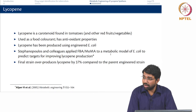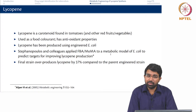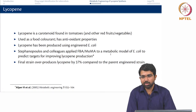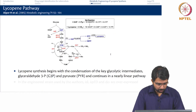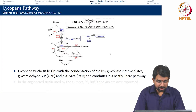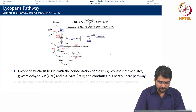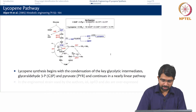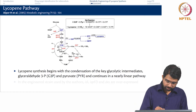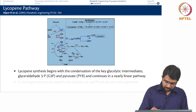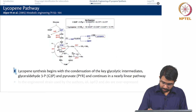The parent strain was already an overproducer and they could improve upon that by 37% solely using an FBA-MoMA approach. This is how the pathway looks: there is glucose that goes to DHAP, G3P, and then to DXP, and finally to lycopene.